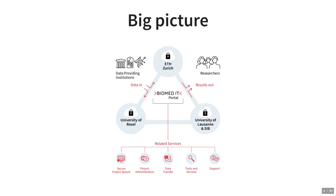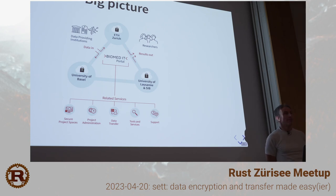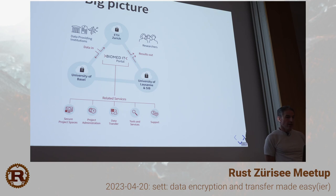BiomedIT is basically an infrastructure which should link data-providing institutions with researchers. It's about how we can transfer data in a very secure manner — because we are in Switzerland — from point A to point B. This infrastructure is composed of three nodes: one in Zurich, one in Basel, and one in Lausanne. Our developer team, the BVIC team, develops tools to help with this.